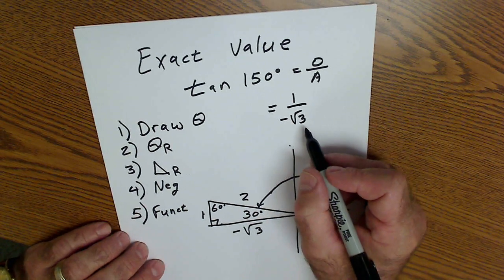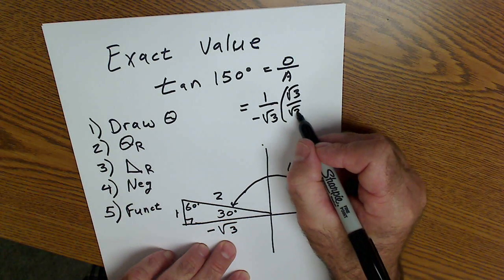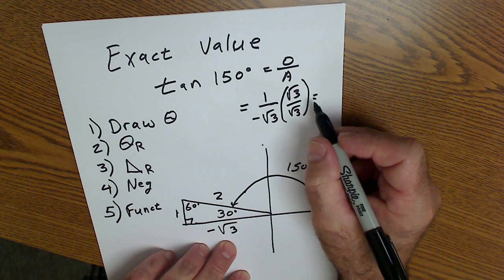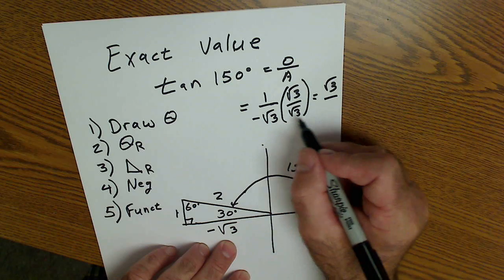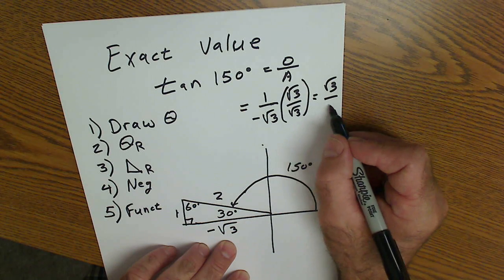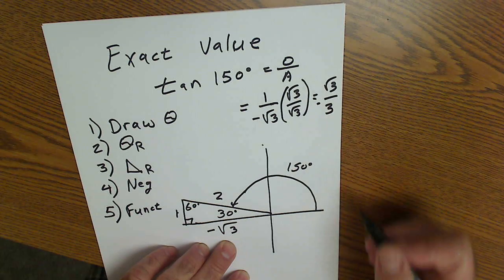You want to rationalize the denominator. I multiply by one so as not to affect the value. Root three over root three, that gives me root three over root three times root three is three, and don't forget your negative. So I have negative root three over three.